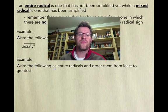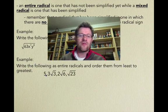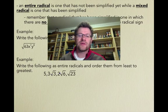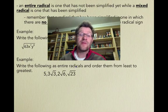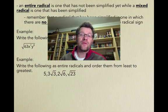Our next example says we're going to write the following as entire radicals and then order them from least to greatest. So we've got 5, we've got 3√3, we've got 2√6, and we've got √23. So without a calculator, it's really hard to tell which one is biggest and which one is smallest. That's why we're going to put them all underneath root signs.